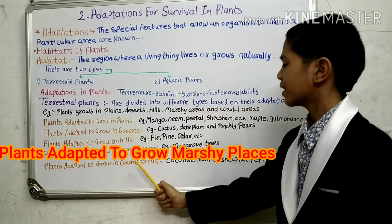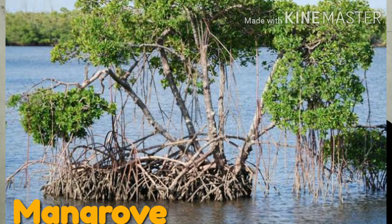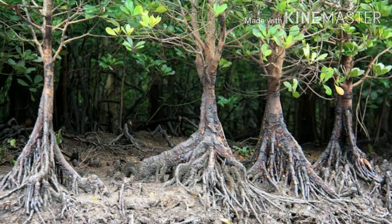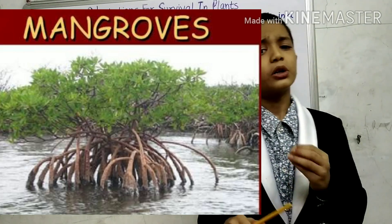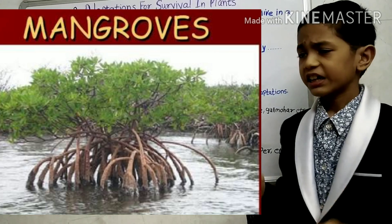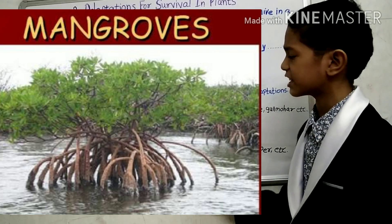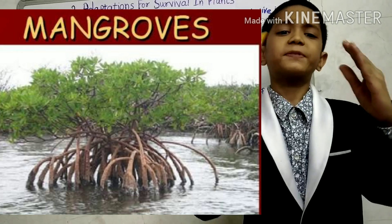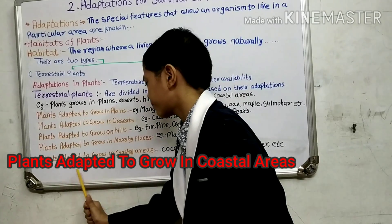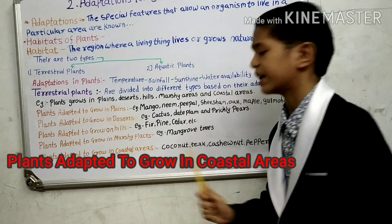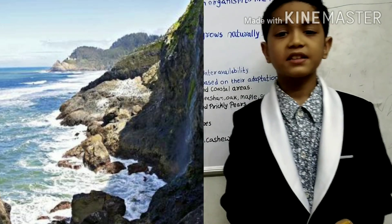Plants adapted to grow in marshy places — the mangrove tree is a common example. Marshy places are those places where the soil is clayey and very sticky, which does not allow the roots to get sufficient air. That is why the roots of these plants grow outside the ground to take in air.